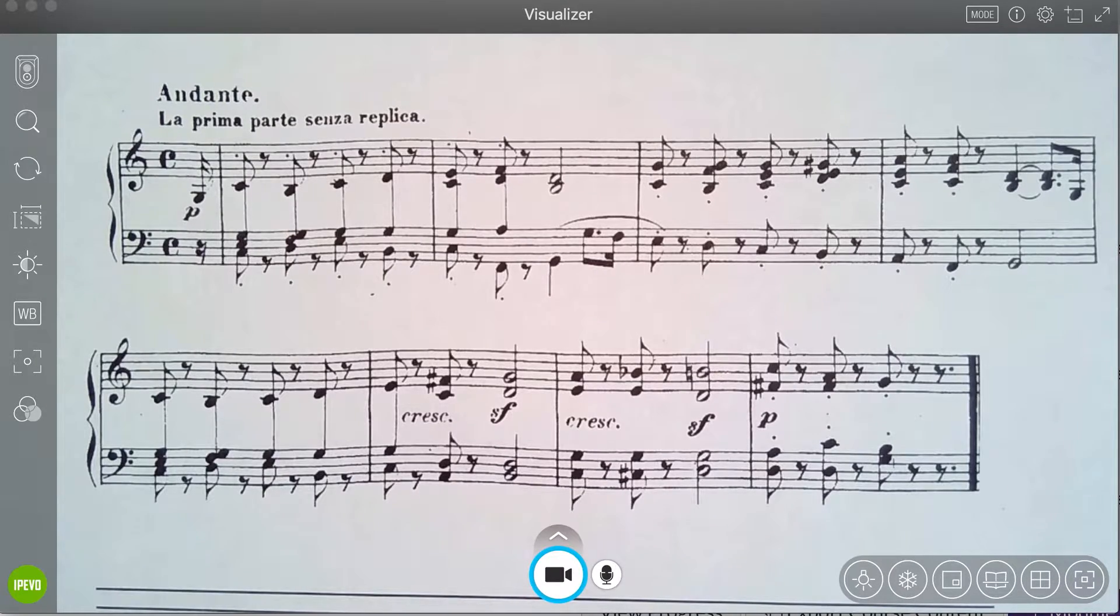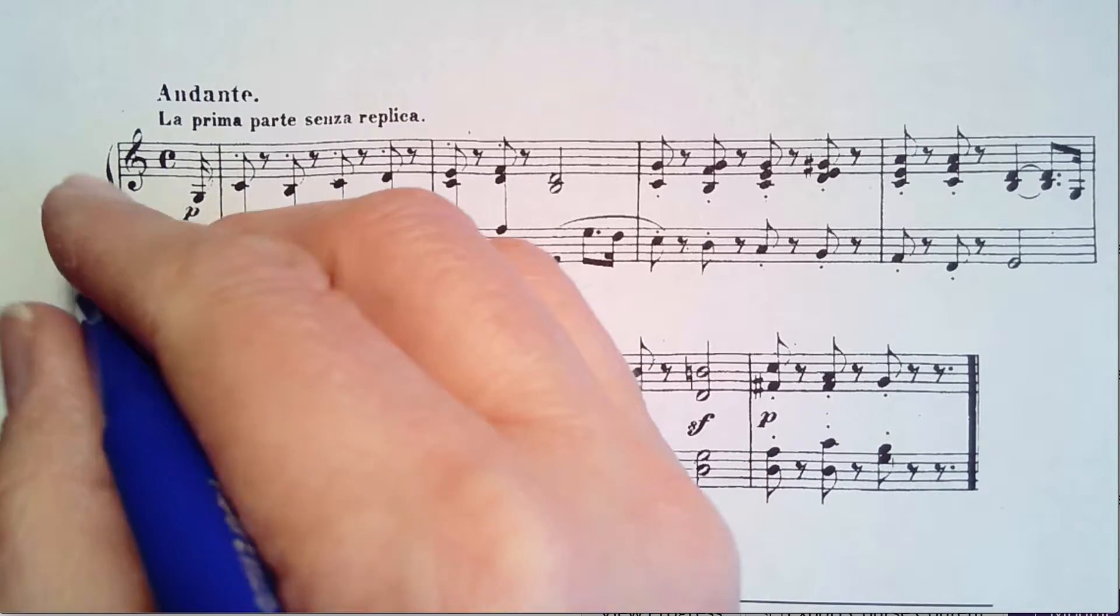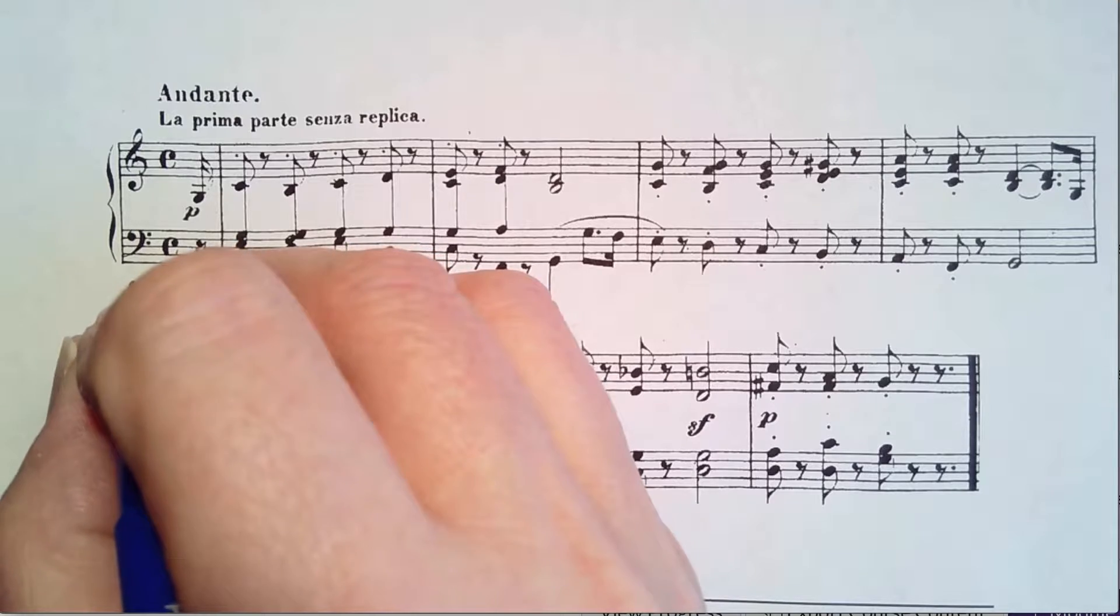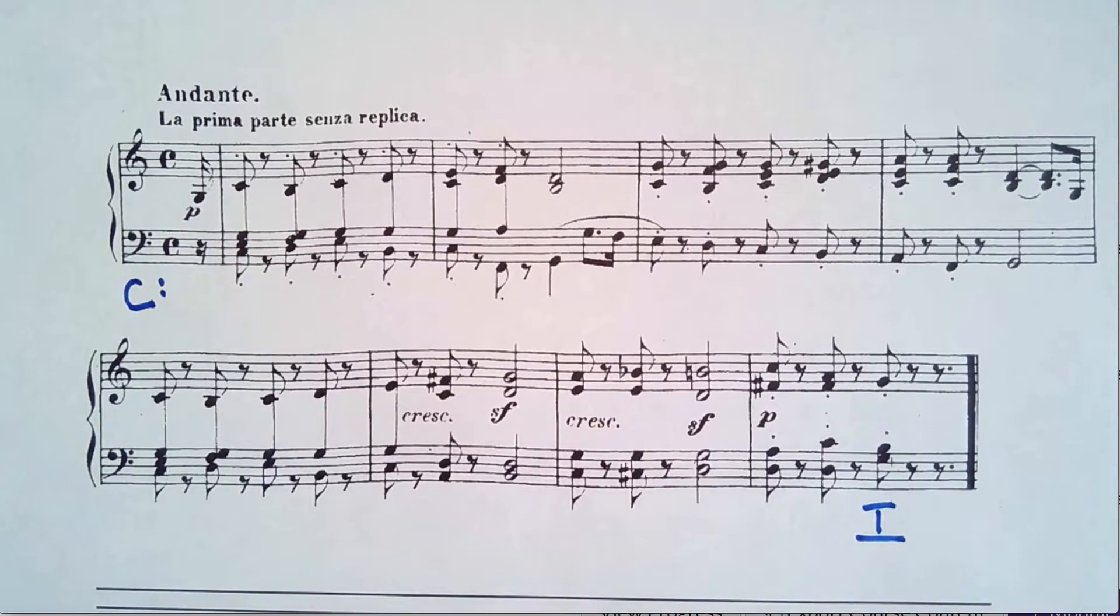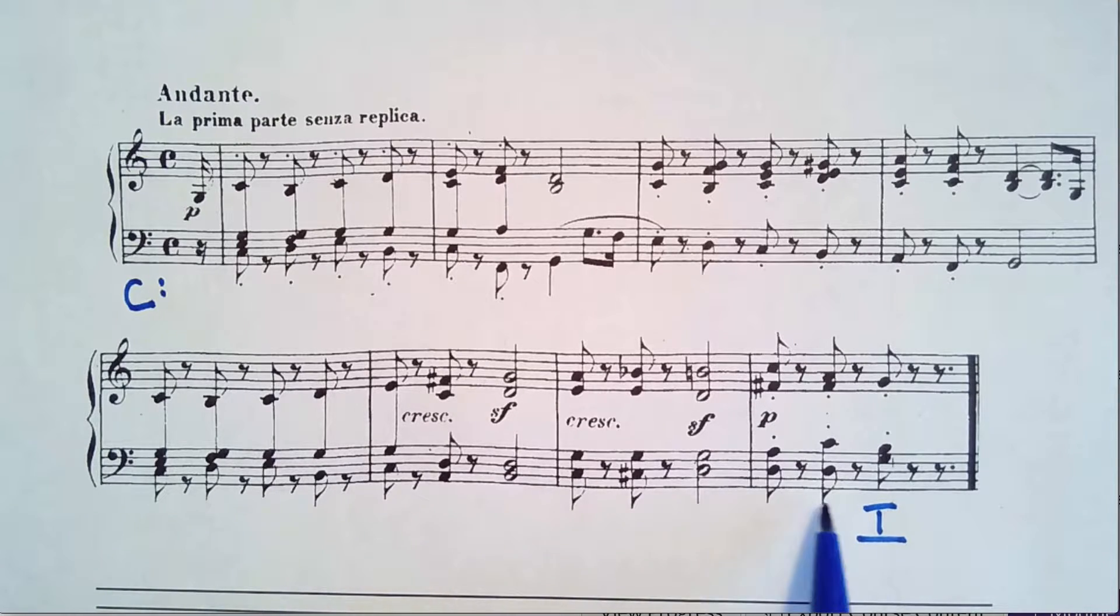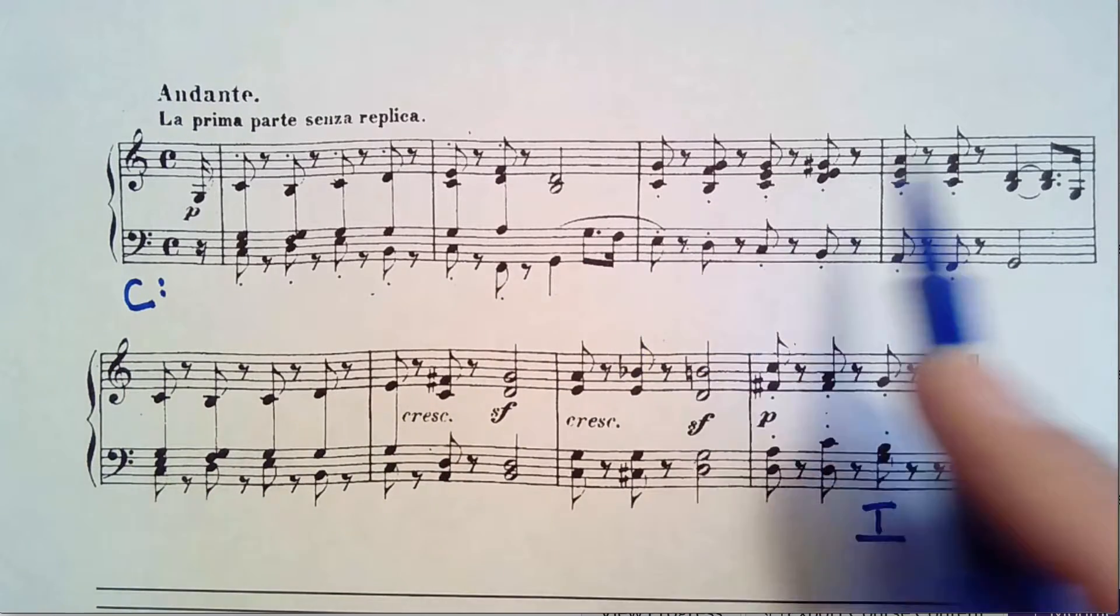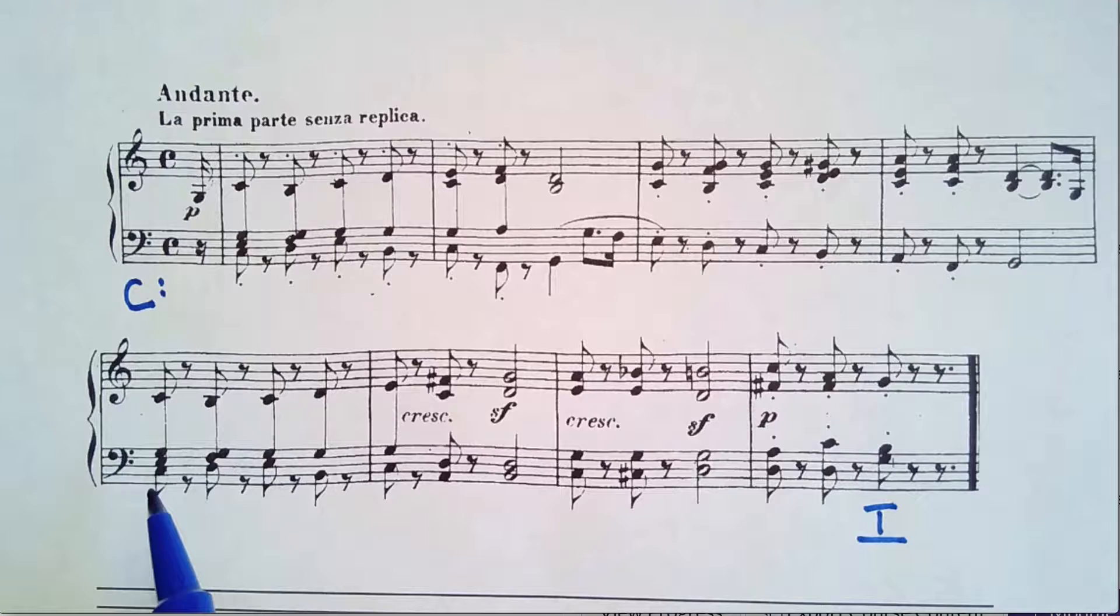Let's look at measures one through eight, the section one. As discussed in the previous video, this begins in the key of C and it ends in the key of G. We'll discuss the modulation as we get to it, but the first three phrases all stay in key of C.